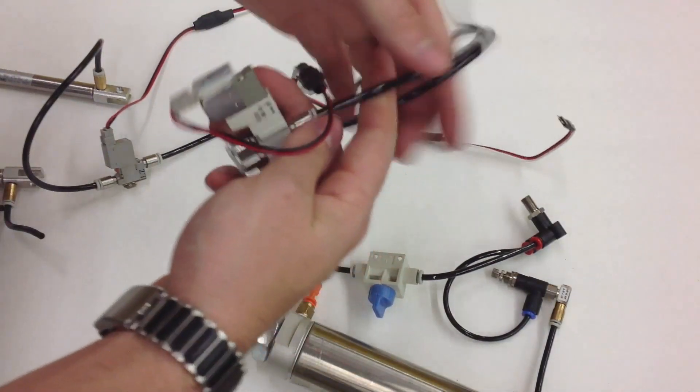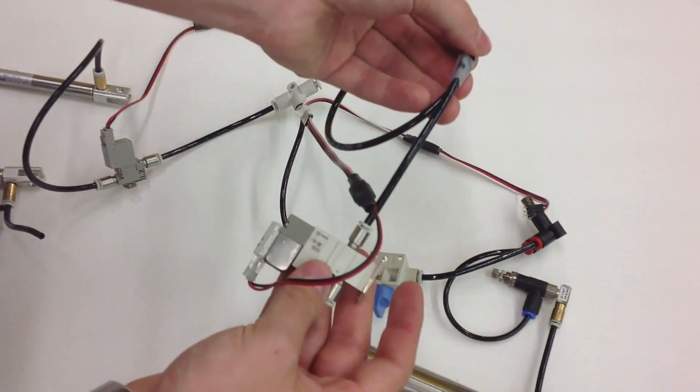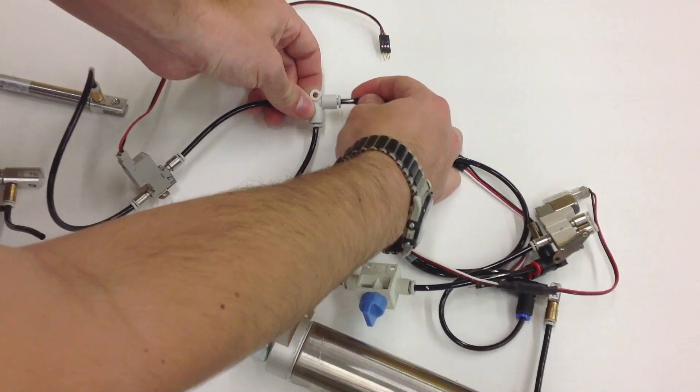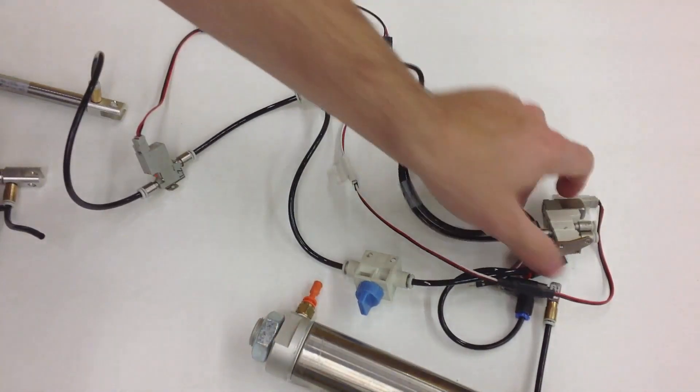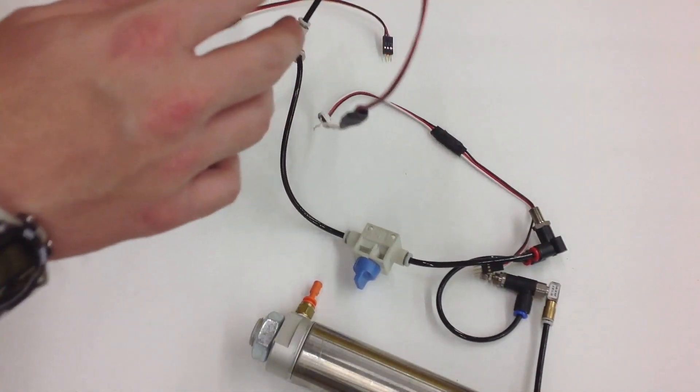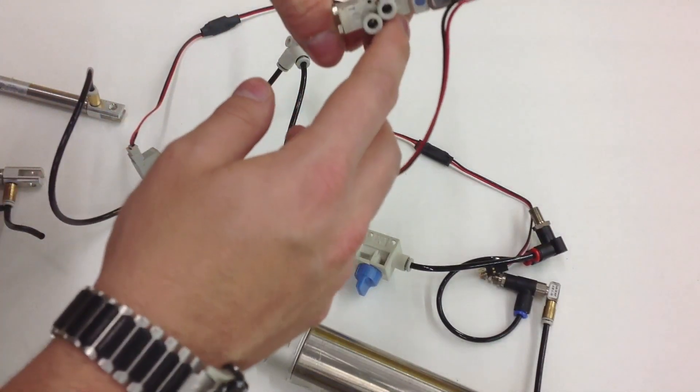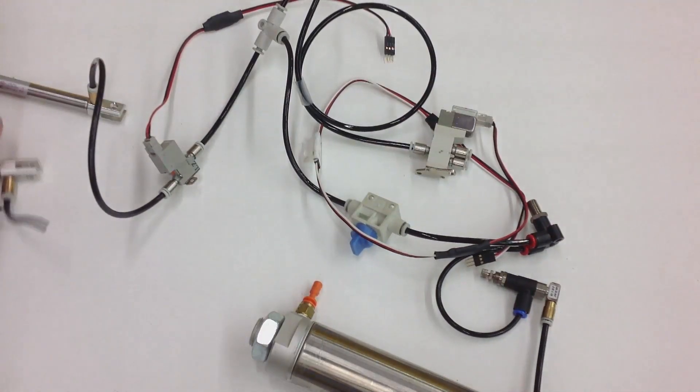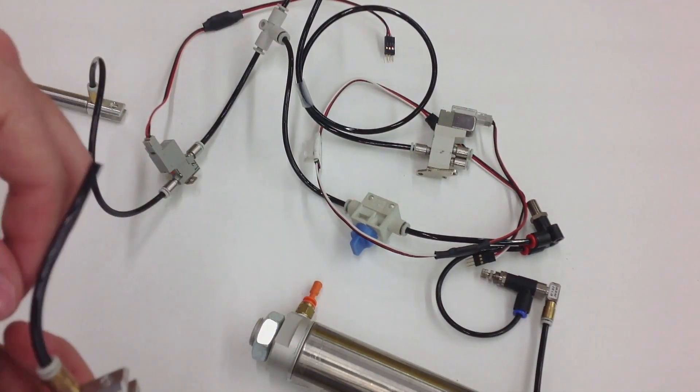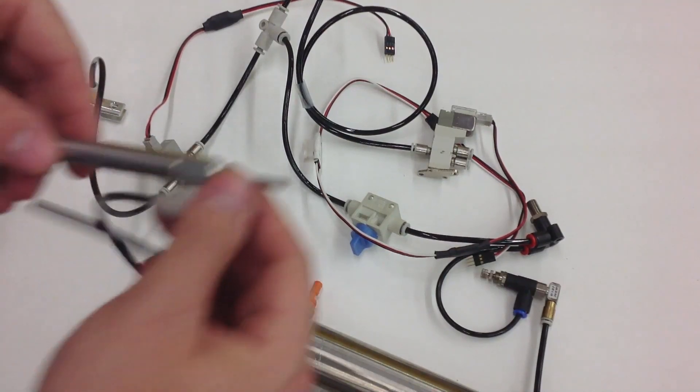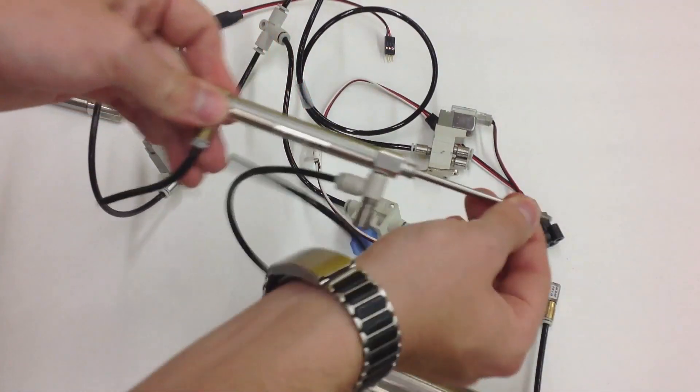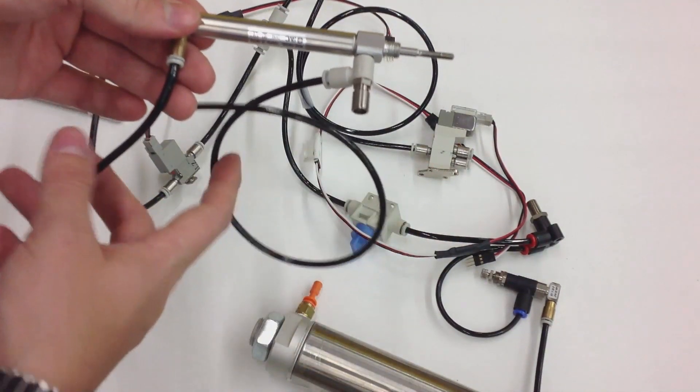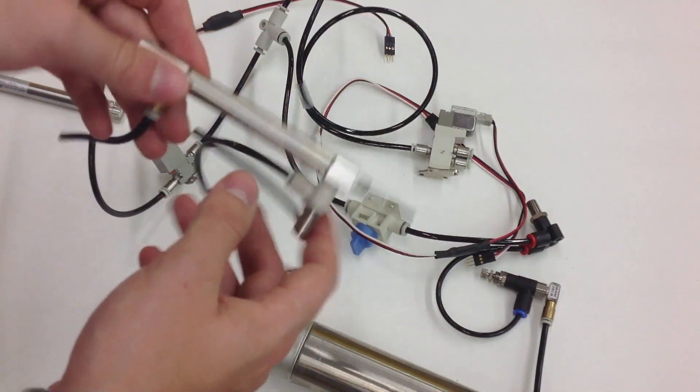Now for the double action piston. The principle is pretty much the same. You have a single input. We connect that to the T adapter. Plug it all the way into the end. Now you have two outputs, A and B.